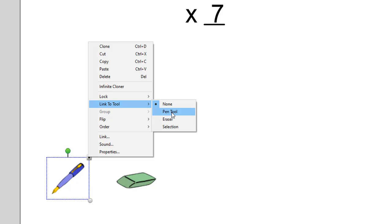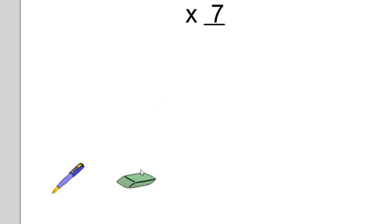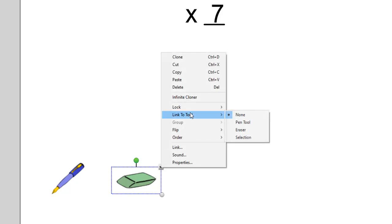Since I'm going to set this up as the pen tool, I'm going to click on pen, and then I'm going to repeat the process because this is my eraser and I'm going to link it to an eraser.